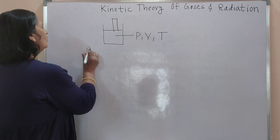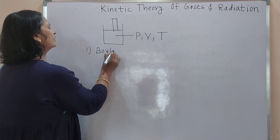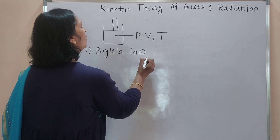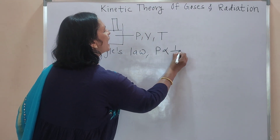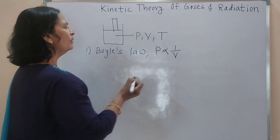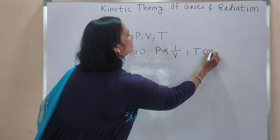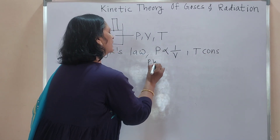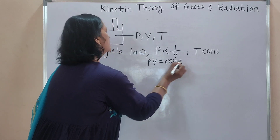The first gas law is Boyle's law. In that law, pressure of a fixed mass of a gas is inversely proportional to the volume when temperature remains constant. That is nothing but PV equals constant.